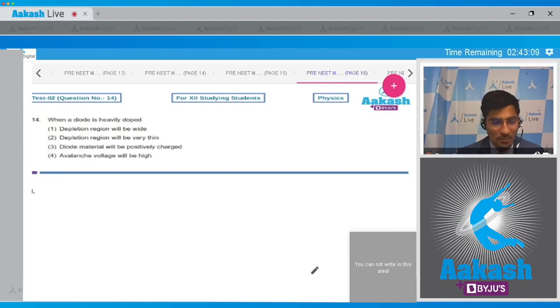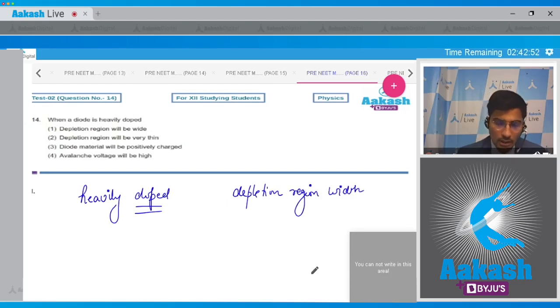Dear students, this is a theoretical question and we must know that in the heavily doped p-n junction diode, the depletion region width reduces. And therefore for this question the correct answer is clearly option number 2.